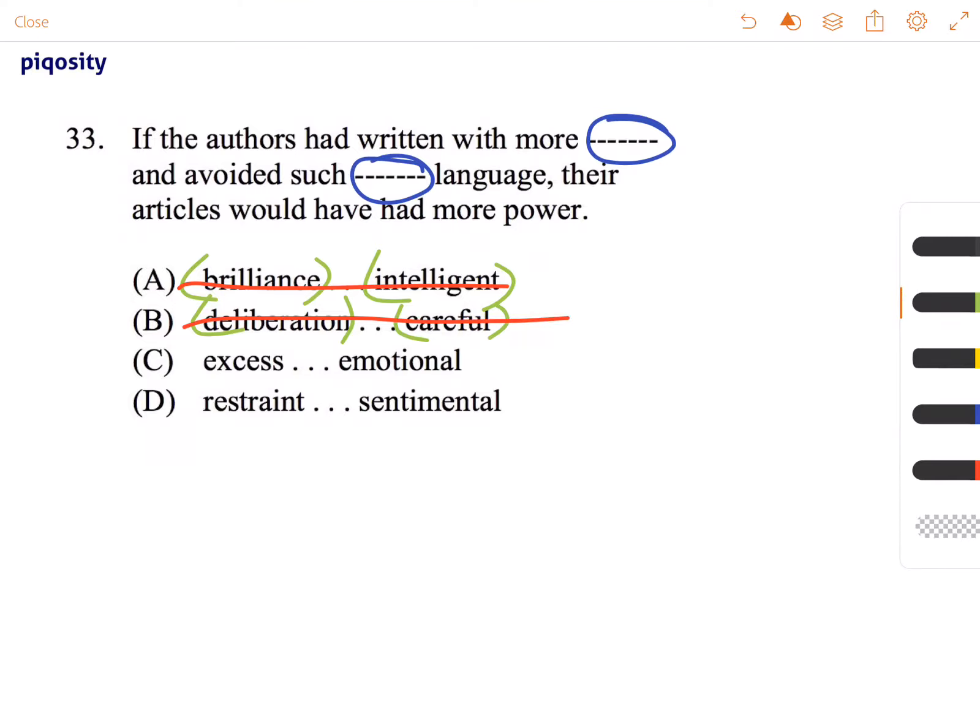So if the authors had written with more excess and avoided such emotional language. So emotional language is more of a positive and then excess is negative. So it's starting out with negative and going towards a positive word. That's not how the structure of the sentence works. So we can just knock that one out.